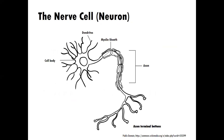Then we'll move to looking at the nerve cell — the neuron — and the different parts of the nerve cell. For example, the axon and axon terminal buttons versus the dendrites. We'll also cover the myelin sheath and what role that has.